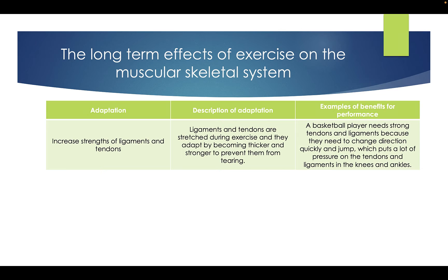Increased strength of ligaments and tendons: ligaments and tendons are stretched during exercise and they adapt by becoming thicker and stronger to prevent them from tearing. A basketball player needs strong tendons and ligaments because they need to change direction quickly and jump, which puts a lot of pressure on their tendons and ligaments in the knees and ankles.